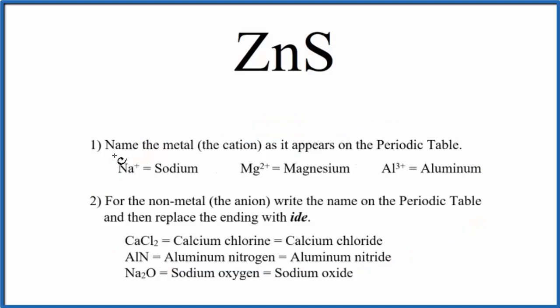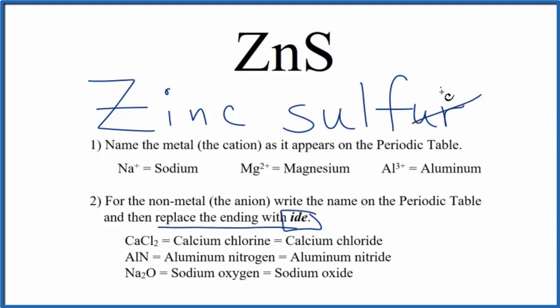So first we write the name of the metal as it appears on the periodic table. Zn, that's zinc. Then we'll write the name of the nonmetal as it appears on the periodic table. S, that's sulfur, lowercase s. And then we replace the ending with ide. So we write ide.